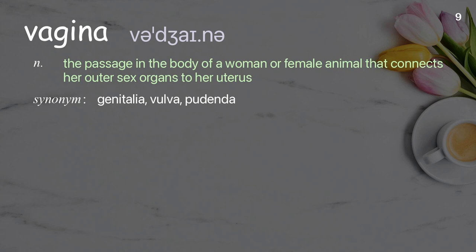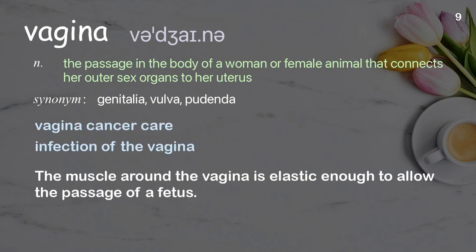Vagina: the passage in the body of a woman or female animal that connects her outer sex organs to her uterus. Examples: Vagina cancer care. Infection of the vagina. The muscle around the vagina is elastic enough to allow the passage of a fetus.